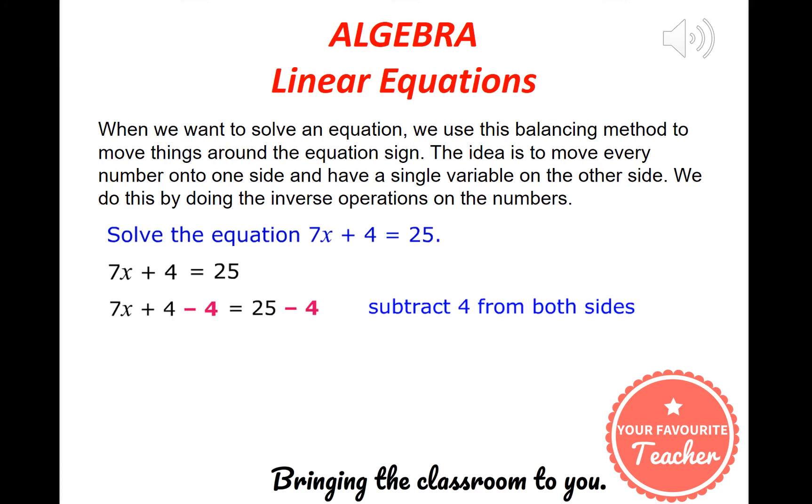So we start off by writing it. I then see that there's a plus 4 on the left hand side and I want to move that away from that side. In other words, I want to get rid of it. So I minus 4 from the left hand side. But I have to minus 4 from the right hand side as well. In other words, subtract 4 from both sides.